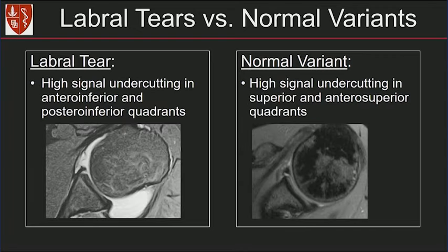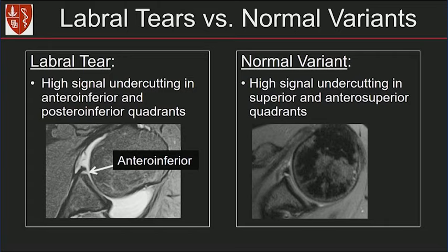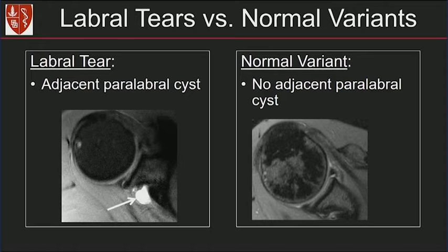In a labral tear, you see high signal undercutting in the antero-inferior and postero-inferior quadrants. There's a separation of the antero-inferior labrum from the glenoid. Remember, normal variants occur most commonly in the superior and antero-superior location — such as the sublabral foramen in the antero-superior quadrant. A labral tear may also have an adjacent paralabral cyst. When you see a cyst, look really hard because there's likely a labral tear. A normal variant should not have any paralabral cyst.